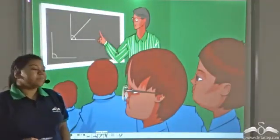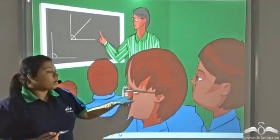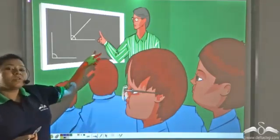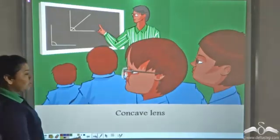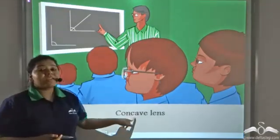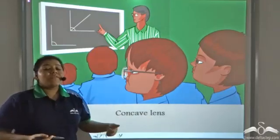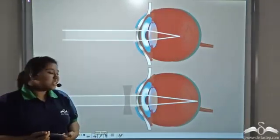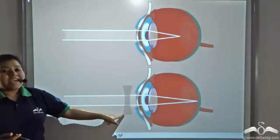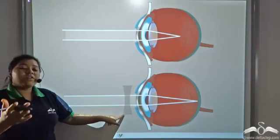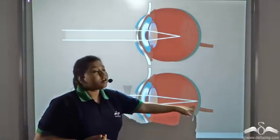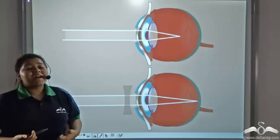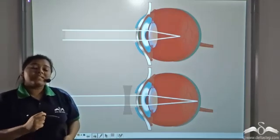So the doctor prescribed a spectacle for Peter and after wearing the specs, he could see the board properly. Now the spectacle had concave lens. Now what does a concave lens do? Well, concave lens helps to focus far objects on the retina, not before the retina. And the power of such a glass that contains concave lens is minus.